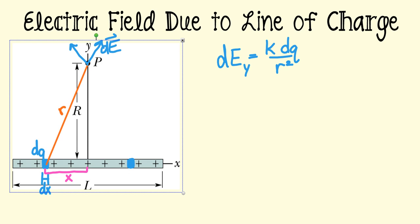To write a y component for this field, I want to define an angle theta. Here's my angle theta right here. And so if I'm only focusing on the y component, because those are the components that won't cancel out, I'm going to multiply this expression by the sine of theta.